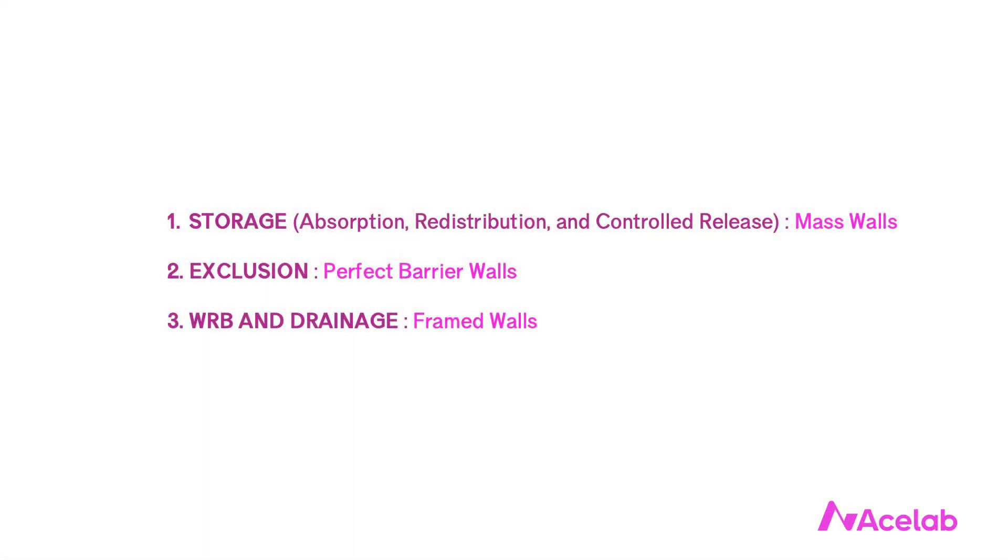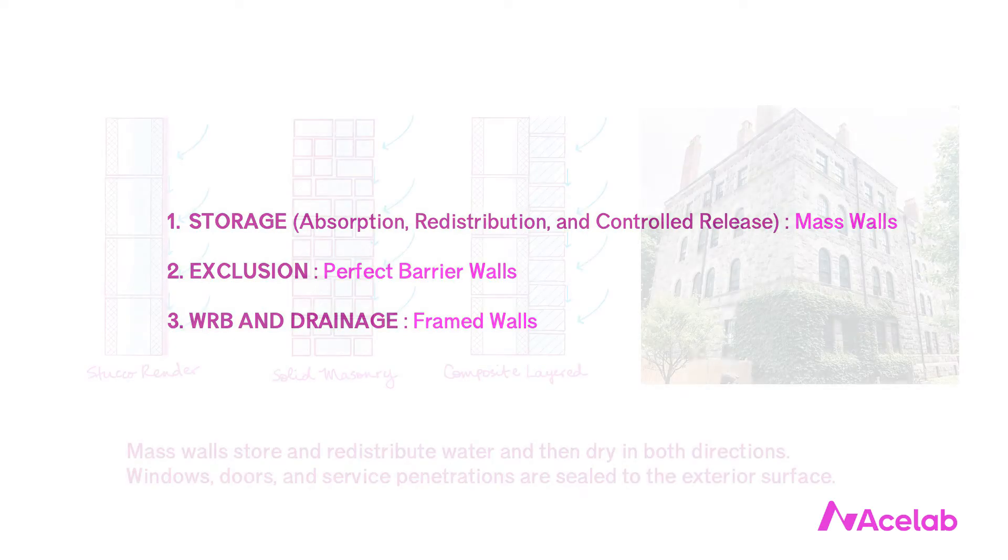The three fundamental ways walls manage water. This may seem basic to a lot of professionals, but in my experience this is where a lot of people — even those with a lot of design and construction experience — first go wrong, either in designing to avoid failure or in diagnosing failure after it has already occurred. Walls manage water in three ways: storage, exclusion, and WRB and drainage.